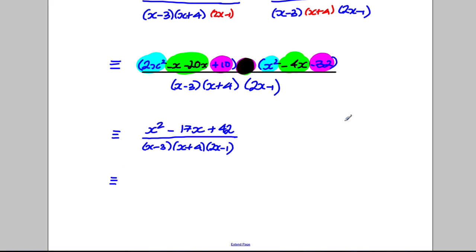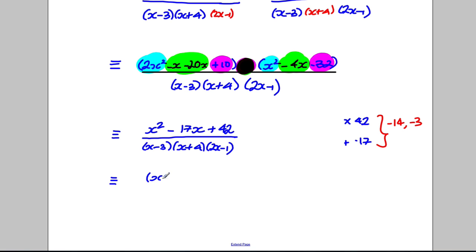Can I factorise the numerator? I need two numbers that multiply to 42 and add to −17. That would be −14 and −3: (−14) × (−3) = 42 and −14 + (−3) = −17. So the numerator factorises as (x − 3)(x − 14), all divided by (x − 3)(x + 4)(2x − 1). I can now cancel the common factor (x − 3) from top and bottom.